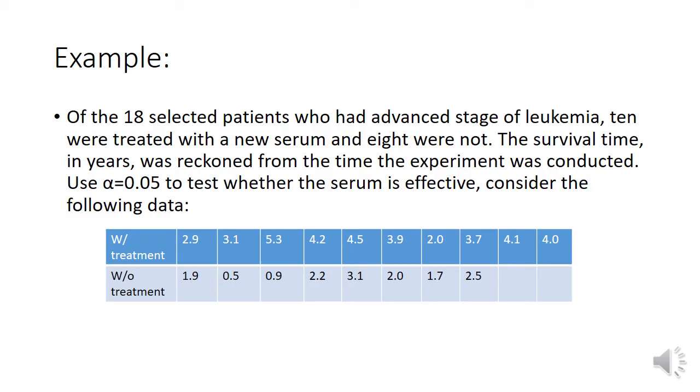Another example: of 18 selected patients who had advanced stage leukemia, 10 were treated with a new serum and 8 were not. We have here the values or the data from patients with treatment and from patients without treatment.